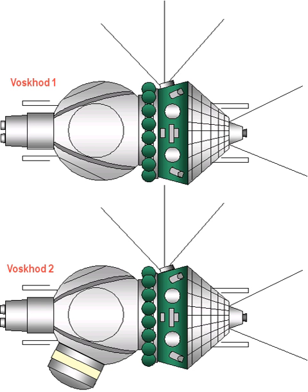The Voskhod spacecraft was essentially a Vostok spacecraft that had a backup solid fuel retrorocket added to the top of the descent module. The ejection seat was removed for more space and two or three crew couches were added to the interior at a 90-degree angle to that of the Vostok crew position.